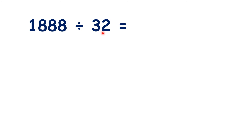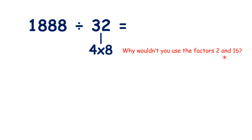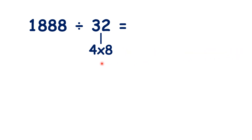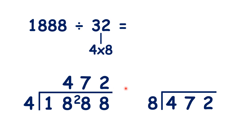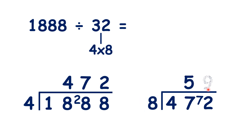So now we're dividing by 32. 4 times 8 is 32. But 32 does have other factors — why wouldn't we use the factors 2 and 16? Well, unless you know your division facts for the 16 times table, that wouldn't make it much easier for you. So let's divide by 4, our first factor. We get 472, which we can then divide by 8, our second factor. And that gives us our answer, 59.